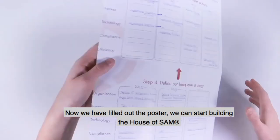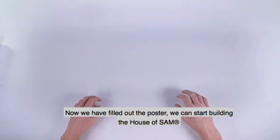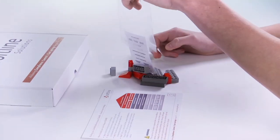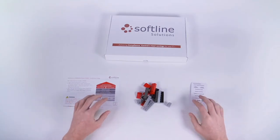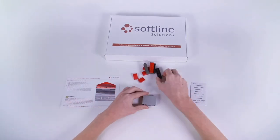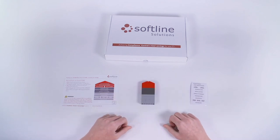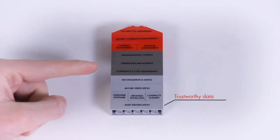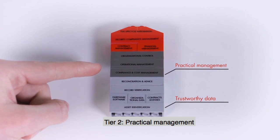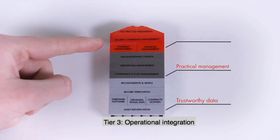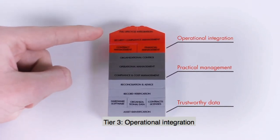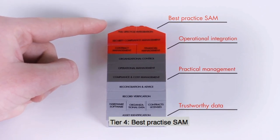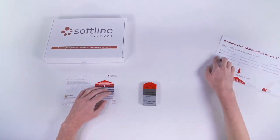Now that we have filled out the poster, we can start building the House of SAM. Tier 1: trustworthy data. Tier 2: practical management. Tier 3: operational integration. Tier 4: best practice SAM. This is a visualization of your SAM strategy.